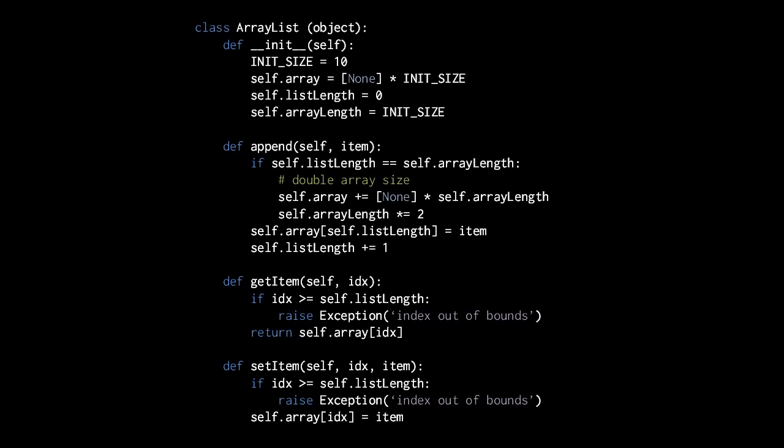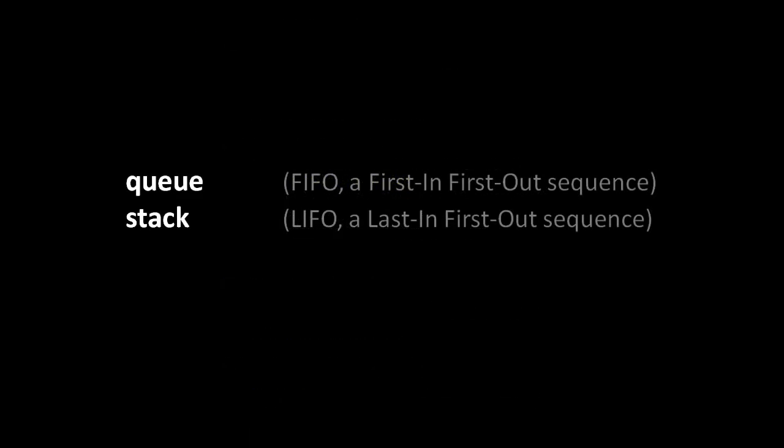What are called queues and stacks are like lists, but they are artificially constrained in that items can only be added to one particular end of the list and also removed from only one particular end of the list. In a queue, items are appended on one end and removed from the other, whereas in a stack, items are appended to one end and removed from that same end. A queue is like a line of people, where people join the line at the end but only leave the line from the front.